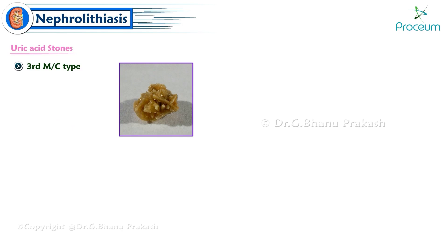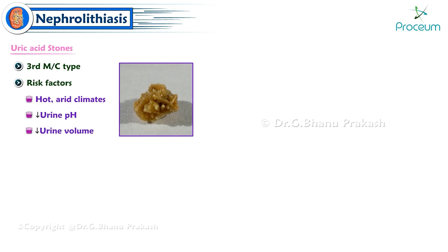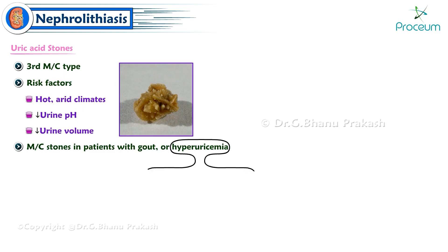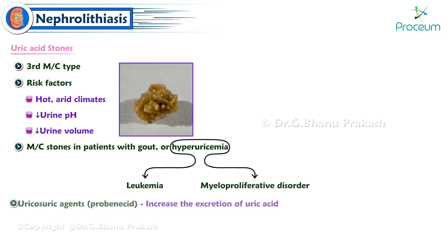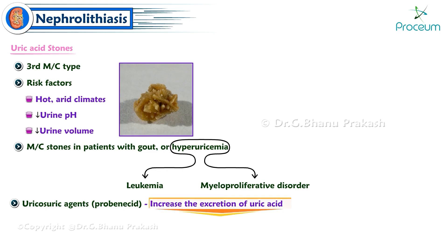Uric acid stones are the third most common type of kidney stone. Risk factors include hot climates, low urine pH, and low urine volume. They are the most common stones in patients with gout or hyperuricemia from leukemia or myeloproliferative disorders. Uricosuric agents such as probenecid increase uric acid excretion, which can accelerate stone formation.